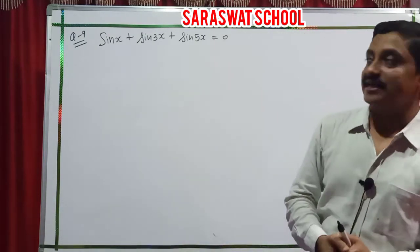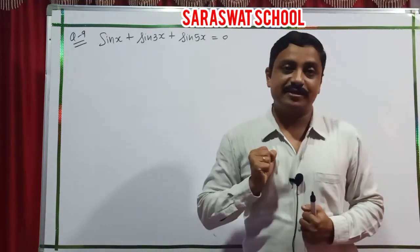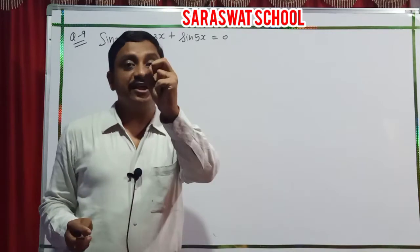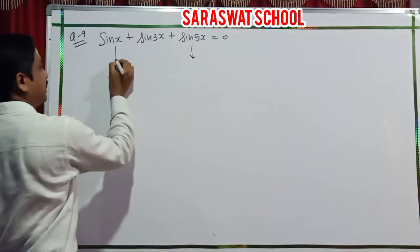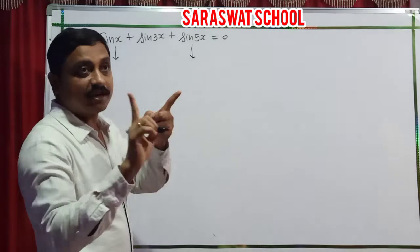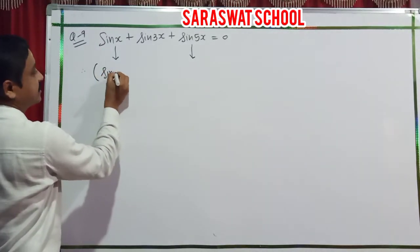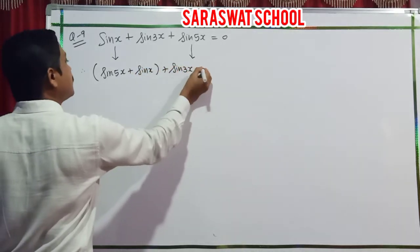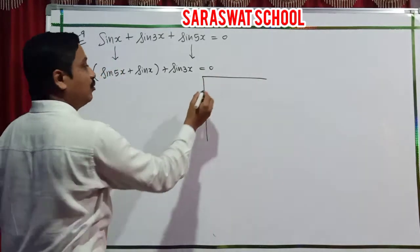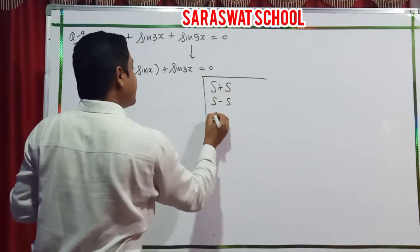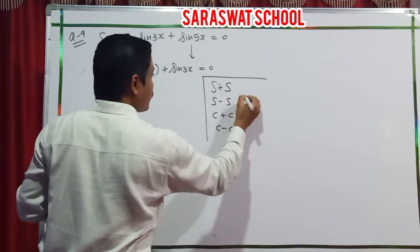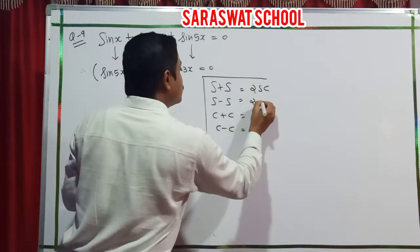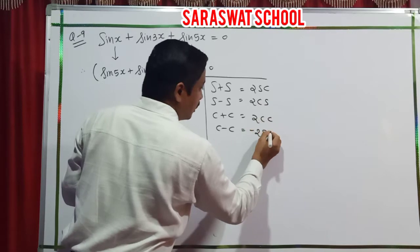Question 9, the last question of this exercise: sin x plus sin 3x plus sin 5x equals 0. Take the highest degree (sin 5x) with the lowest degree (sin x). Applying S plus S property — which gives 2 sin cos. Adding: (5x+x)/2 = 3x; subtracting: (5x-x)/2 = 2x. So: 2 sin 3x cos 2x plus sin 3x equals 0.